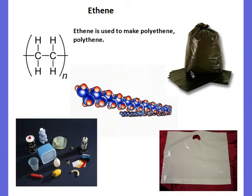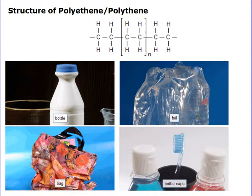We sometimes hear it called polyethene or polyethylene. There are some other examples of uses of polyethene: black rubbish bags, Tupperware containers, bottles, cream or milk bottles, and plastic wrap that goes around groups of bottles.